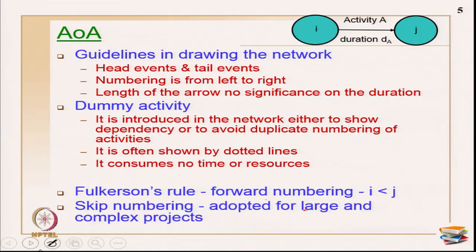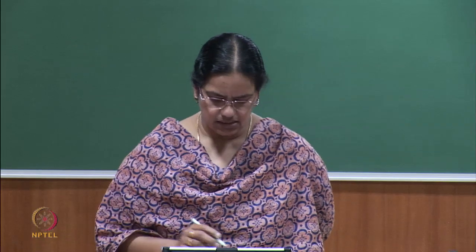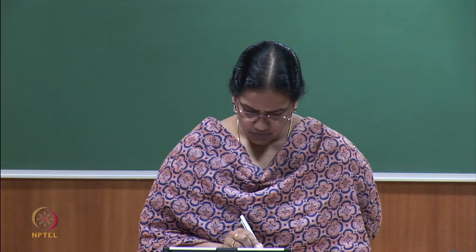Fulkerson's rule states that I always has a number less than J. Skip numbering is adapted for large, complex projects because changes and scope additions are unavoidable. If you number consecutively as 1, 2, 3, 4, 5, 6, adding activities requires renumbering. The general advice is to leave gaps and use numbering like 10, 20, 30, or 10, 15, 30, 50, so that activities can be added when the project scope changes.